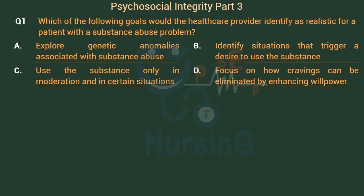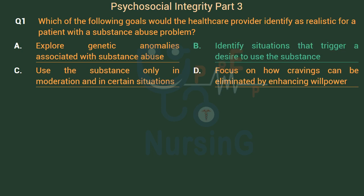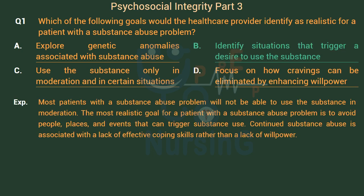The right answer is Option B: Identify situations that trigger a desire to use the substance. Most patients with a substance abuse problem will not be able to use the substance in moderation. The most realistic goal is to avoid people, places, and events that can trigger substance use. Continued substance abuse is associated with a lack of effective coping skills rather than a lack of willpower.